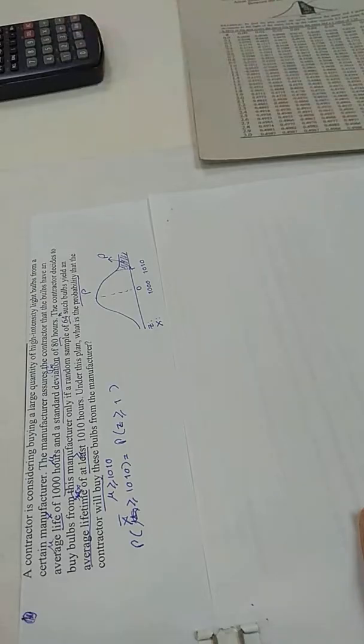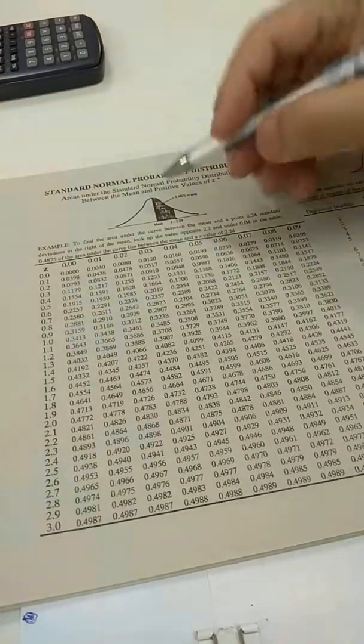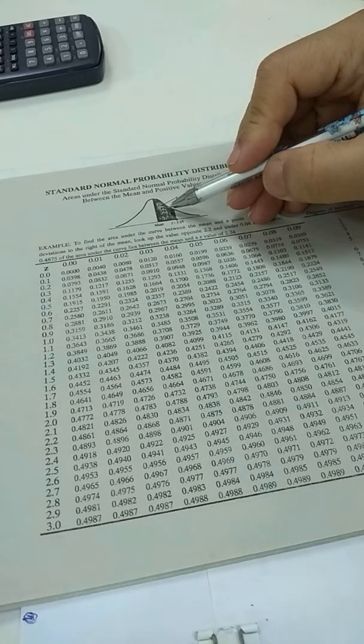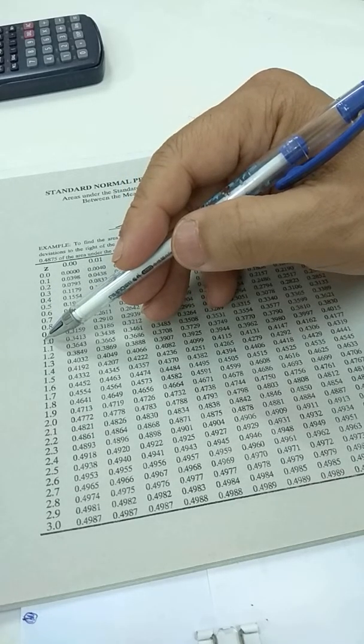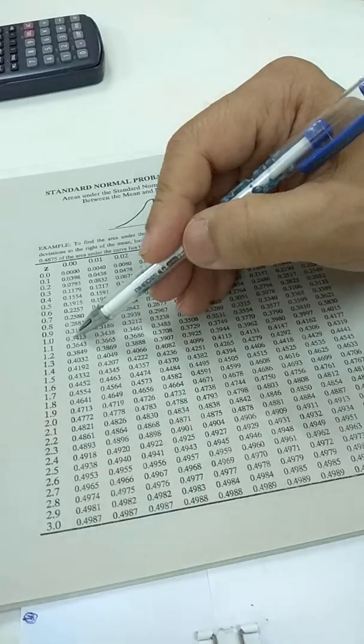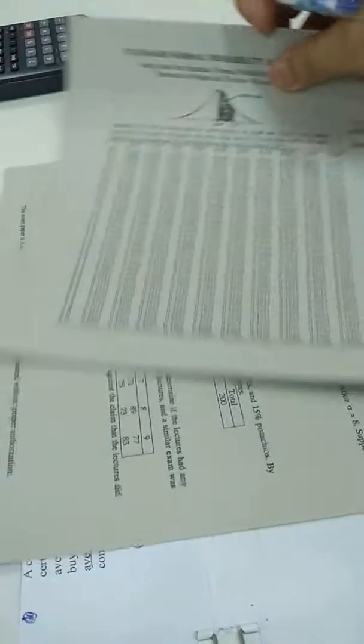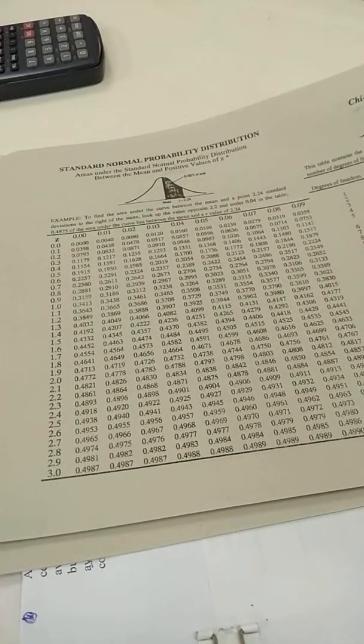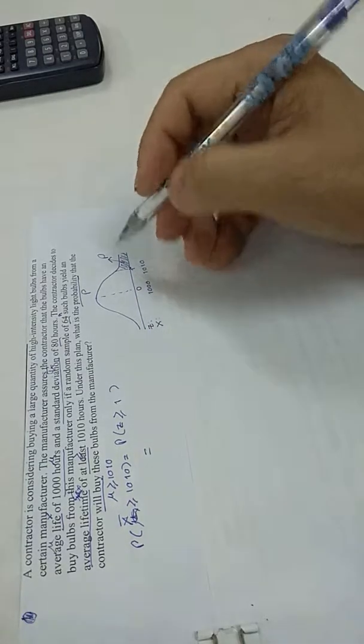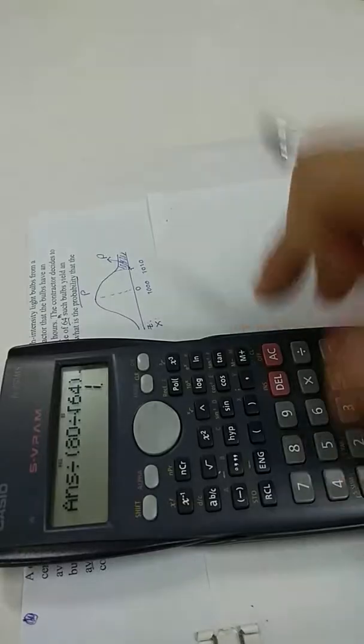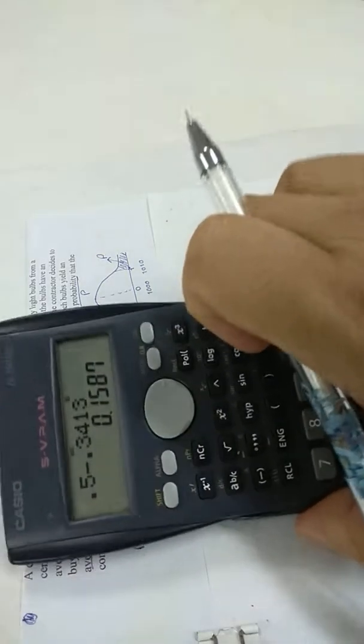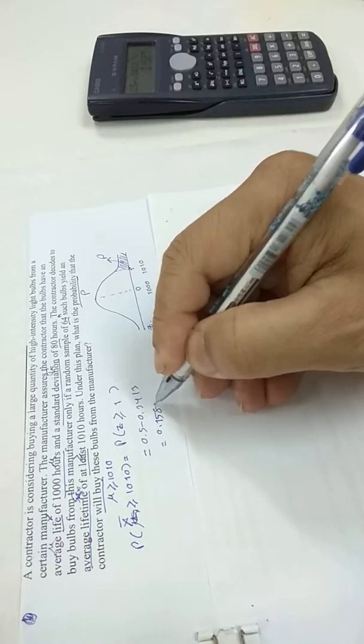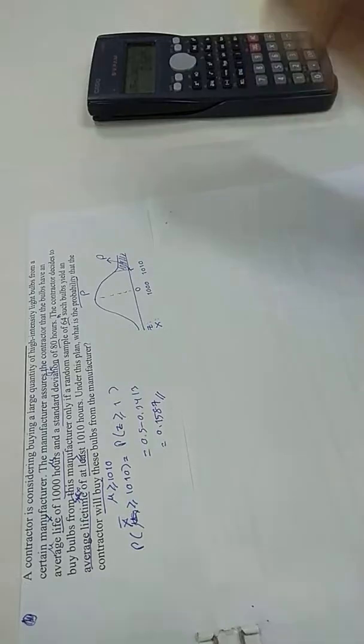In this table, middle area is given. The area between 0 and 1, you read at row 1.0, column 0.00, which is 0.3413. This is this black area, 0.3413. Therefore, this is 0.5 minus 0.3413. You calculate it, 0.5 minus 0.3413 is equal to 0.1587. This is the answer.